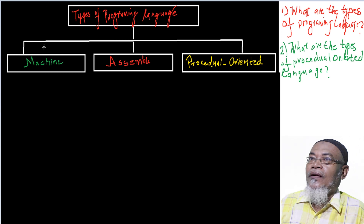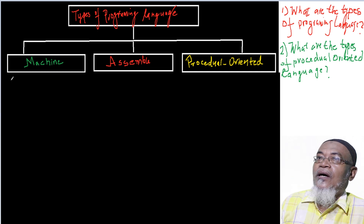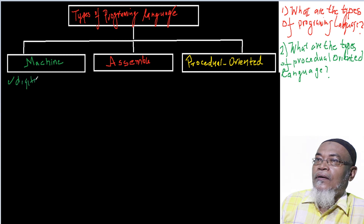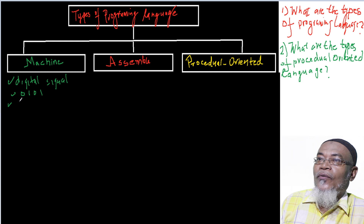Basically, there are three types of programming language: machine language, assembly language, and procedural oriented language. A machine language is basically a digital signal. As we found out in a previous lesson, digital signals are 0s and 1s.